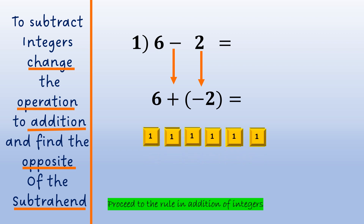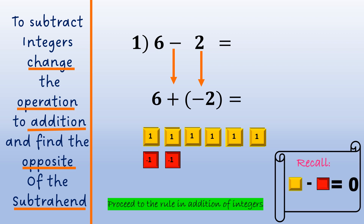Using algebra tiles, we will represent this expression. We have 6 yellow tiles to represent positive 6 and 2 red tiles to represent negative 2. Recall that 1 yellow tile plus 1 red tile is equal to 0. So we take out 2 pairs of yellow and red tiles. We have 4 yellow tiles left. So 6 plus negative 2 is equal to 4, and 6 minus 2 is equal to 4.